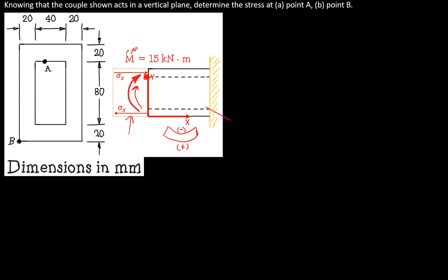That's why we need to find the neutral axis. The neutral axis is an axis that passes through the centroid of the cross section and is perpendicular to the plane of symmetry. To find the neutral surface or neutral axis, you first need to find the centroid of your shape. In this case, half of 120 is 60 and half of 80 is 40, so that would be the center, and we will have a neutral axis passing through this section.